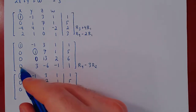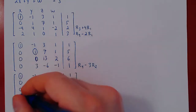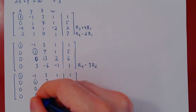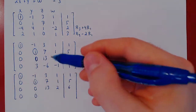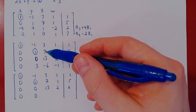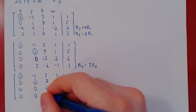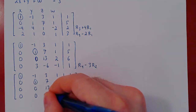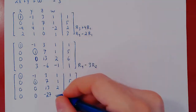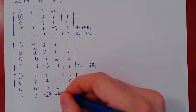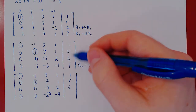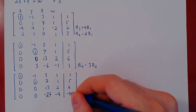Let's perform the row operation. Zero minus zero: zero. Three minus three: zero. Negative six minus three times seven — negative twenty-one — is negative twenty-seven. Negative one minus three: negative four. One minus three times five — one minus fifteen — negative fourteen.